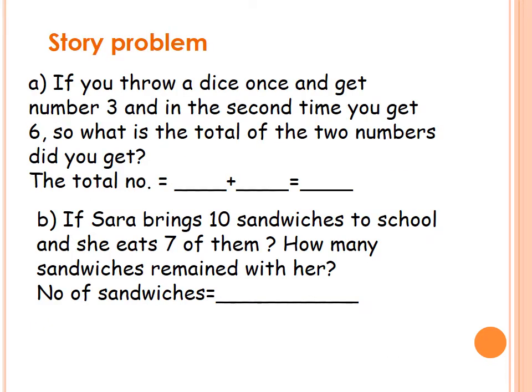And now, let's read these story problems together. The first one: if you throw a dice once and get number 3, and in the second time you get number 6, what is the total of the two numbers? 3 and 6. So, we're gonna add 3 plus 6. Once we get 3, then we get 6. 3 plus 6 equals — after 6: 7, 8, 9. Here is 9.